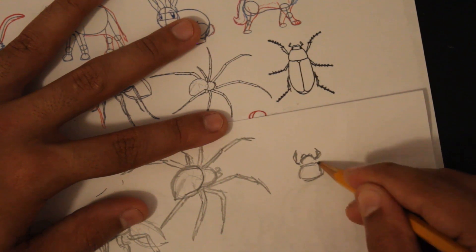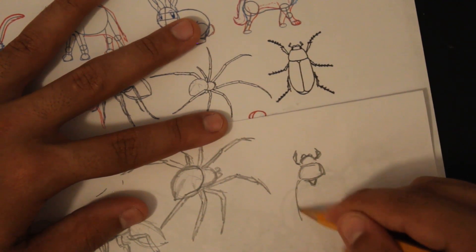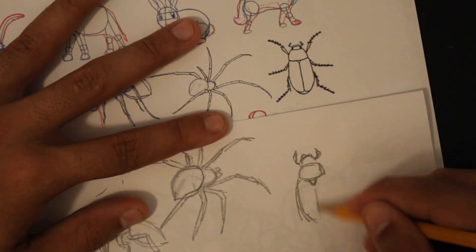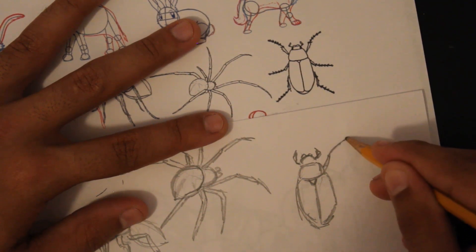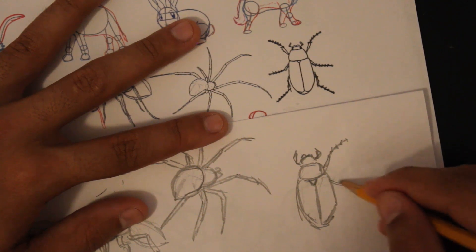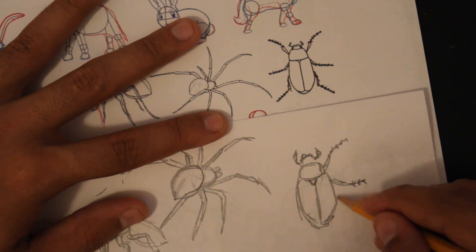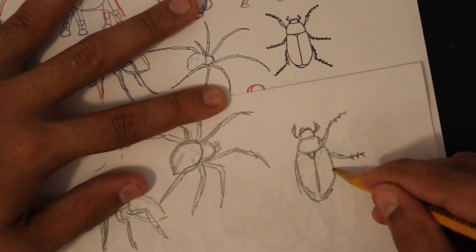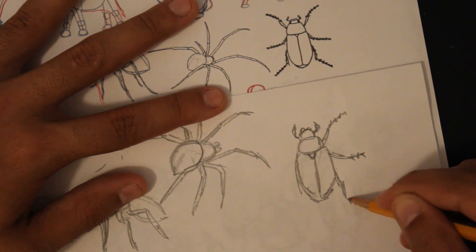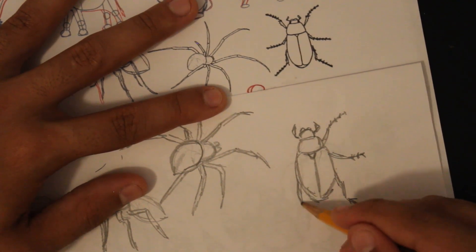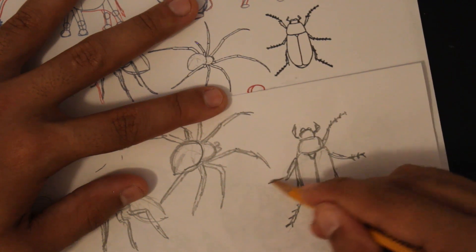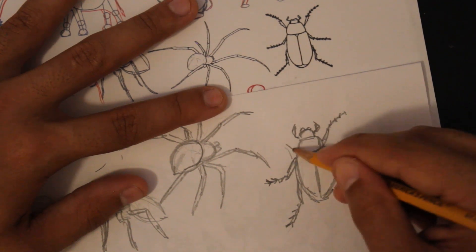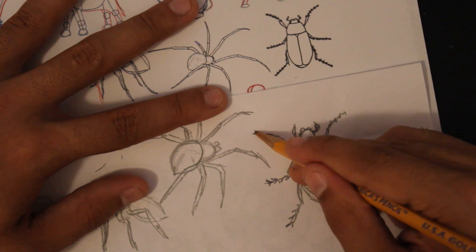Lastly is this beetle. It's also very simple because it is just a bunch of shapes. And just do the same thing on the other side to finish up the insects. And that concludes the insects.